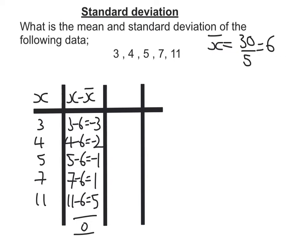Now, the last column — what we do is we square the numbers we've just had, so square the previous column. Negative 3 squared is going to become 9. Negative 2 squared is going to become 4. Negative 1 squared is 1. 1 squared is 1. 5 squared is 25.